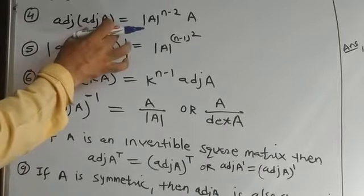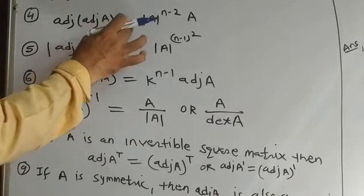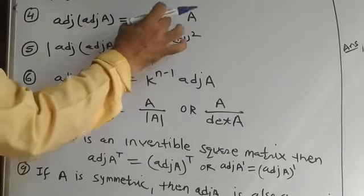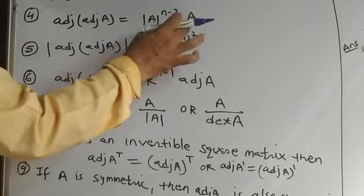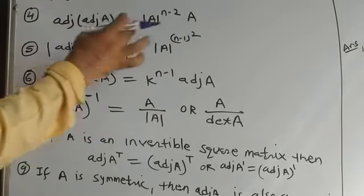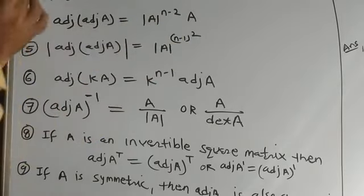Fourth property: Adjoint of Adjoint A is equal to determinant A raised to the power n minus 2, multiplied by A.